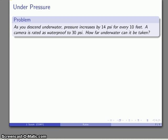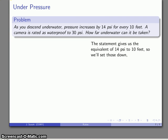Let's do a more difficult problem. Under pressure. As you descend underwater, pressure increases by 14 PSI, that's pounds per square inch, for every 10 feet. If you get a camera that claims it can be taken underwater, there's a little footnote that says it's waterproof to 30 PSI. The question is, how far underwater does that work out to be? The statement gives us a relationship, 14 PSI to 10 feet. We'll set those down.